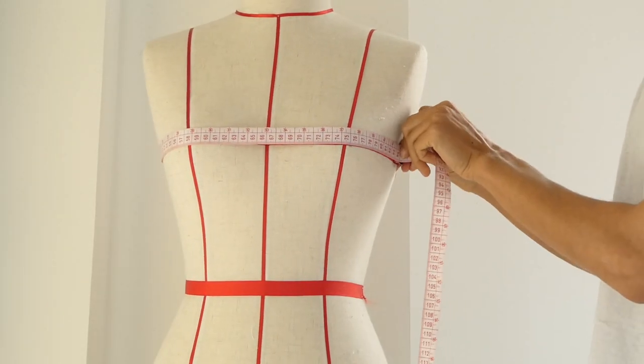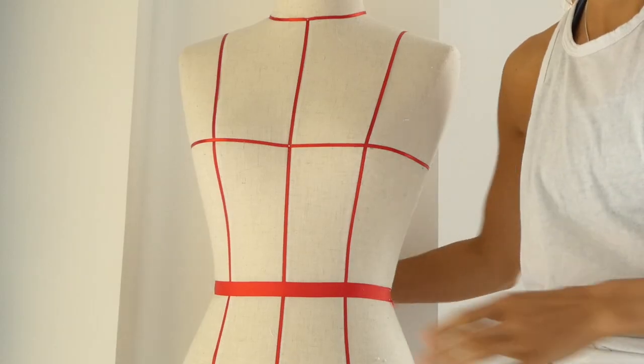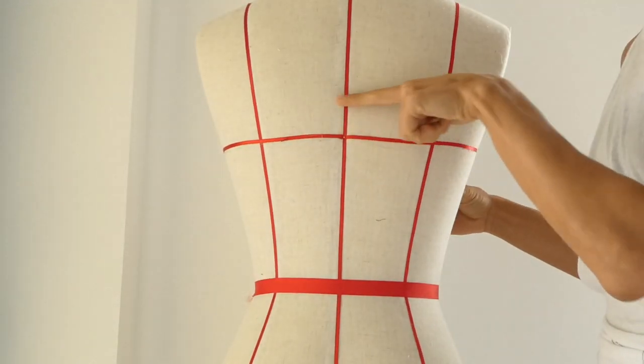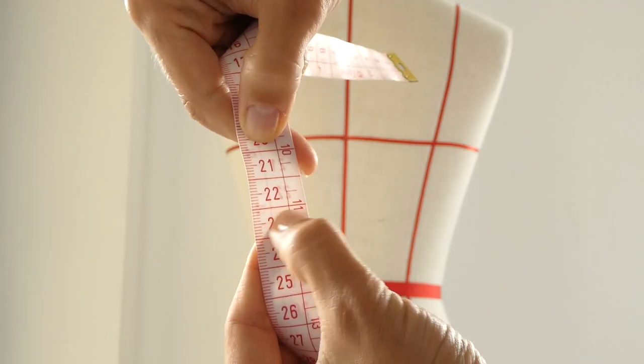First we're going to start by measuring the widest part of your chest and then adding 2 centimeters to that measurement. And then we're going to take a measurement from the smallest part of your waist and up to how high you want the top to be. And then add 2 centimeters to that measurement as well.